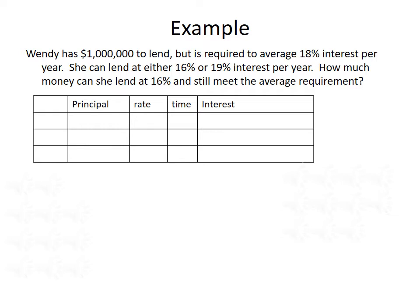In this table, we want to consider the principal invested, the rate of interest returned, the amount of time, and the overall interest gained. On the left-hand side, we're going to list the different ways that money can be lent: 16% interest and 19% interest, and we also want to keep track of the total amount lent out. Since we don't know how much was lent at 16%, let's let that be X. The total amount she can lend is $1 million, so the amount lent at 19% should be 1 million minus X.